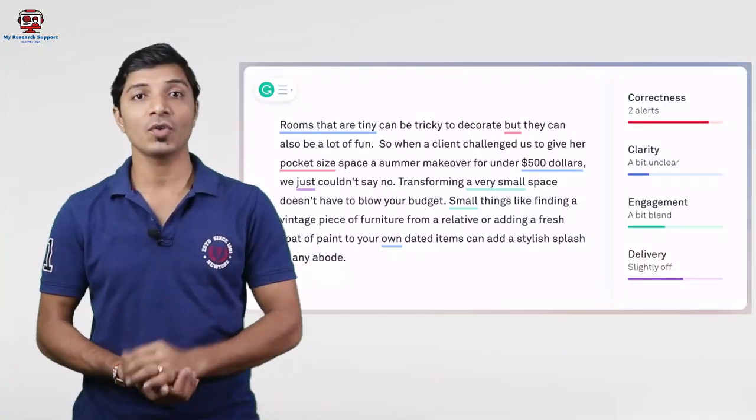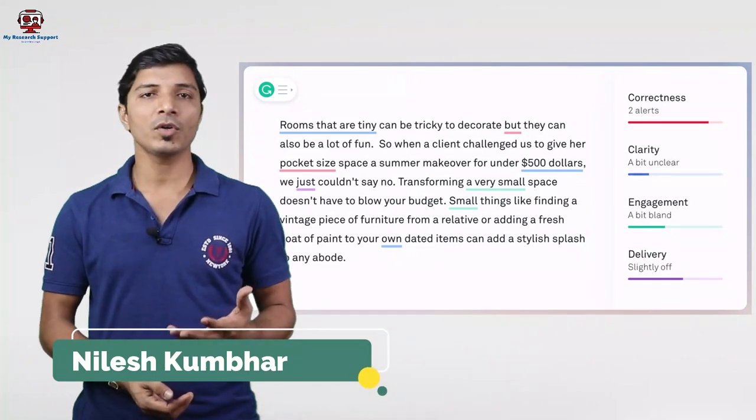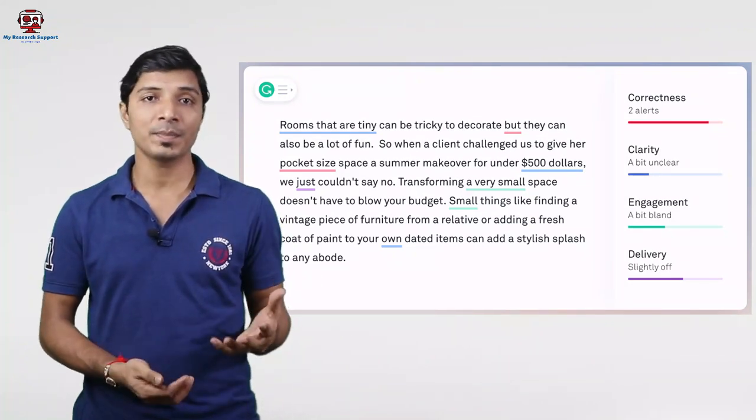To write a research article with correct English, or writing a research article without any grammatical mistakes, plays a very important role as far as research article acceptance or publication is concerned. Sometimes we approach consultancies that charge very heavily, and as a result, in today's video we'll be discussing some grammar checking software. We'll compare them and decide the best, effective, user-friendly, and budget-friendly software for your research article or thesis.